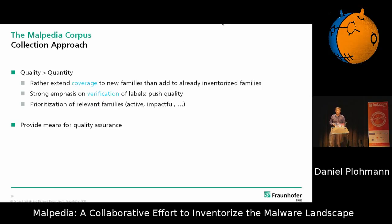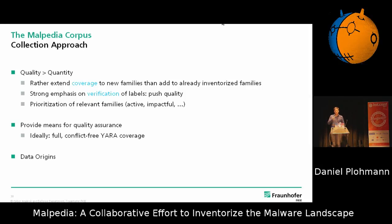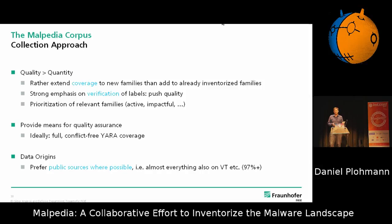In the long run, it is a really good idea to write some means of quality assurance. Say you have a Yara rule for every family — you can ensure that your Yara rules do not have false positives on other families, and that they are still recent enough to find new versions whenever you add them to the corpus. With regard to data origins, I prefer public sources where possible — basically everything that's in Malpedia is also from VirusTotal, so it's like 97%. I really want to have stuff that can be obtained in another fashion as well.